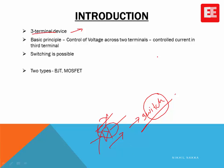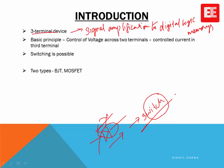Three-terminal devices are used in signal amplification, and their application ranges from signal amplification to designing digital circuits, digital logic, and memories. Today's advanced computers and mobile phones — the building blocks of all these technological innovations — are these three-terminal devices. The invention of three-terminal devices has truly revolutionized technology.